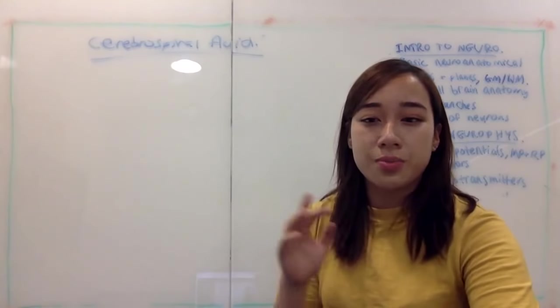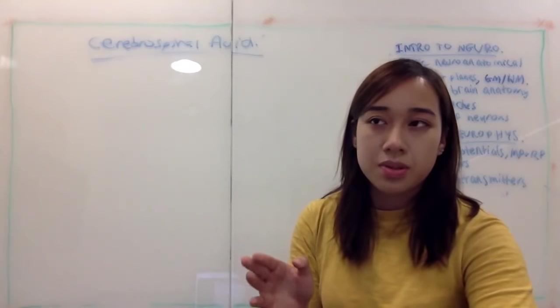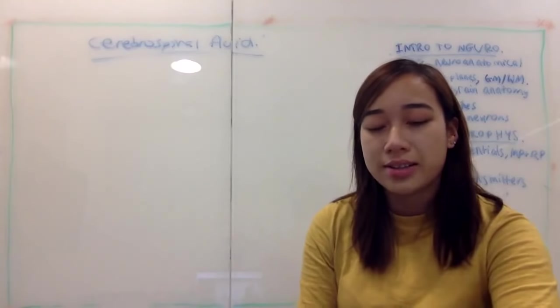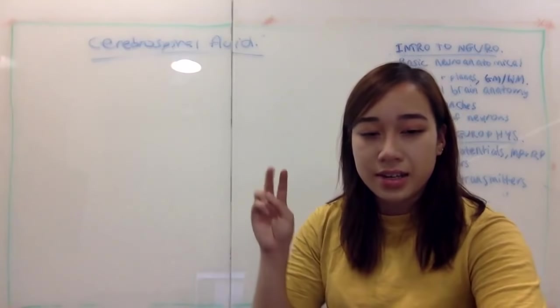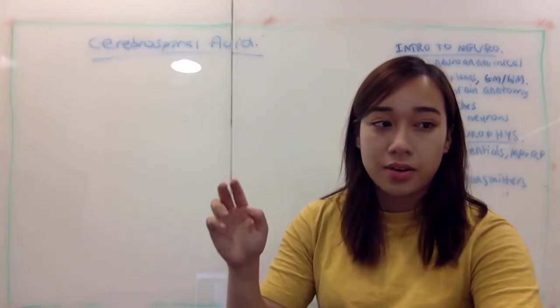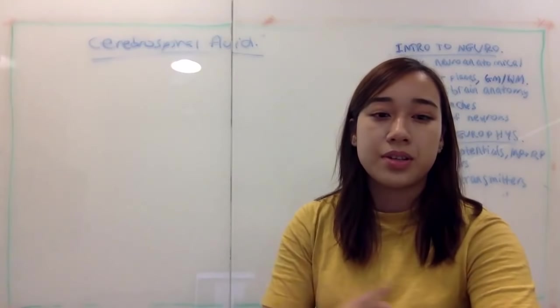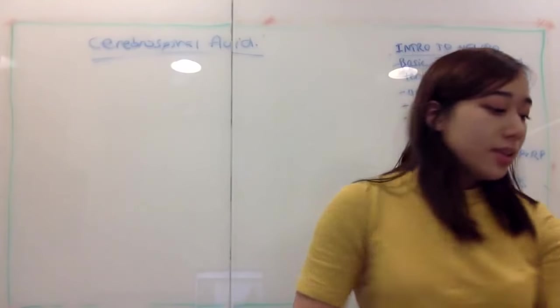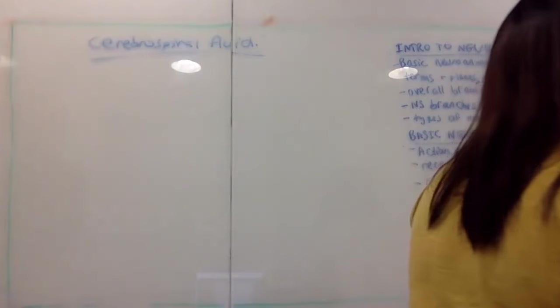For the state round, just remember what your textbook says, because that's what they're going to test you on — and that's that there are 10 times the amount of glial cells compared to neurons.